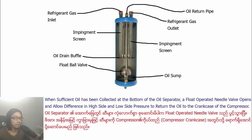When sufficient oil has been collected at the bottom of the oil separator, a float valve opens and allows the high-side to low-side pressure differential to return the oil to the crankcase of the compressor.